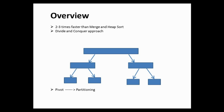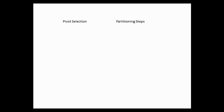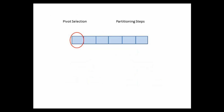One more thing: we have several ways for pivot selection and partitioning steps, which greatly affect the algorithm's performance. For example, someone can choose the pivot as the first element of the list, or it can be the last element of the list.